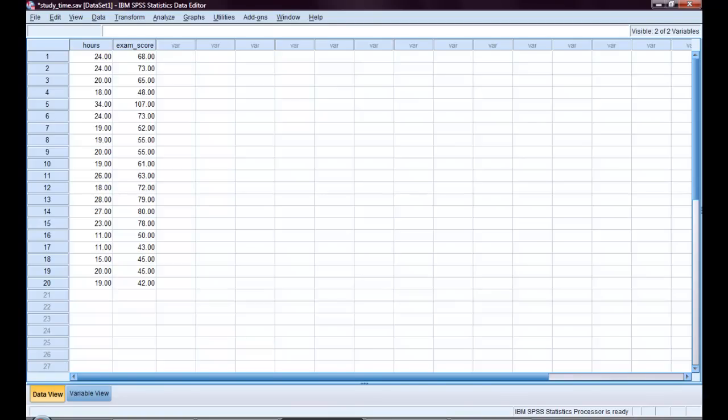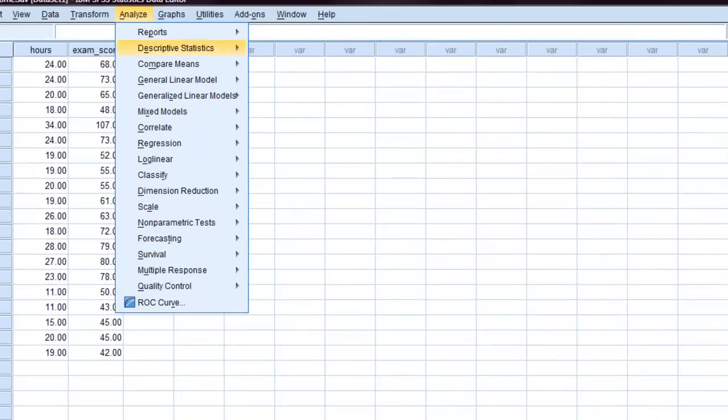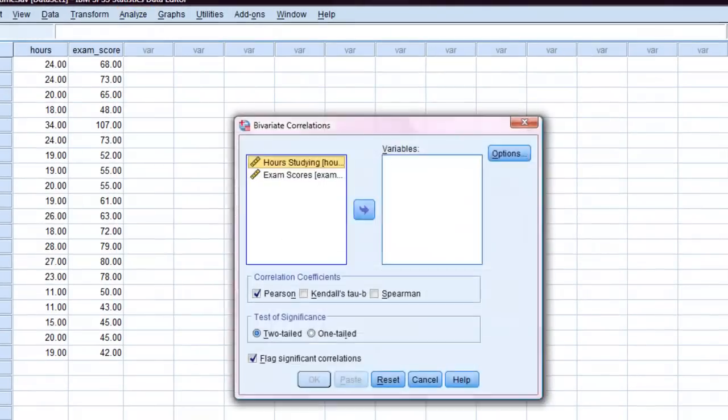To conduct this study, we'll go to analyze, correlate, bivariate. And we'll simply move both of the variables over into the variables box. Then just make sure flag significant correlations is checked and click OK.